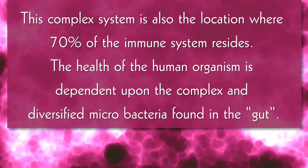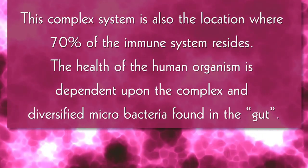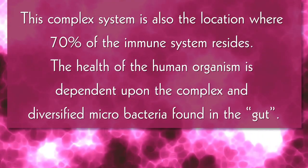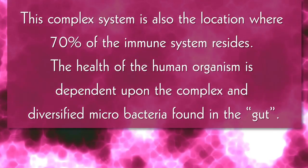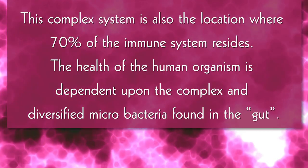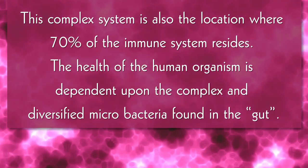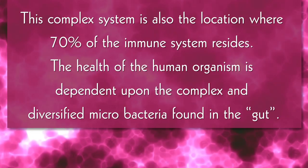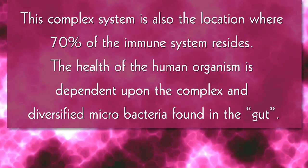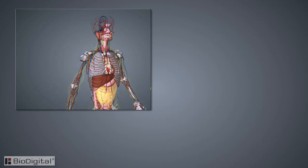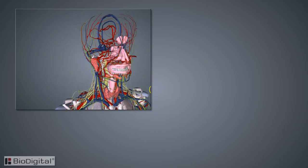This complex system is also the location where 70% of the immune system resides. The health of the human organism is dependent upon the complex and diversified micro bacteria found in the gut. To begin the descent into the digestive system, it is important to start in the mouth.